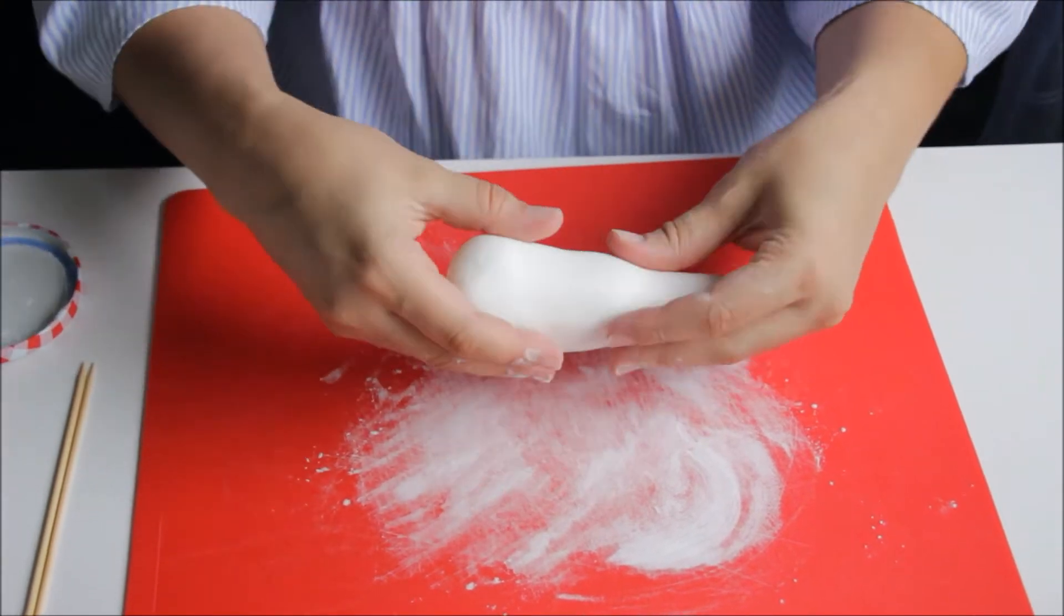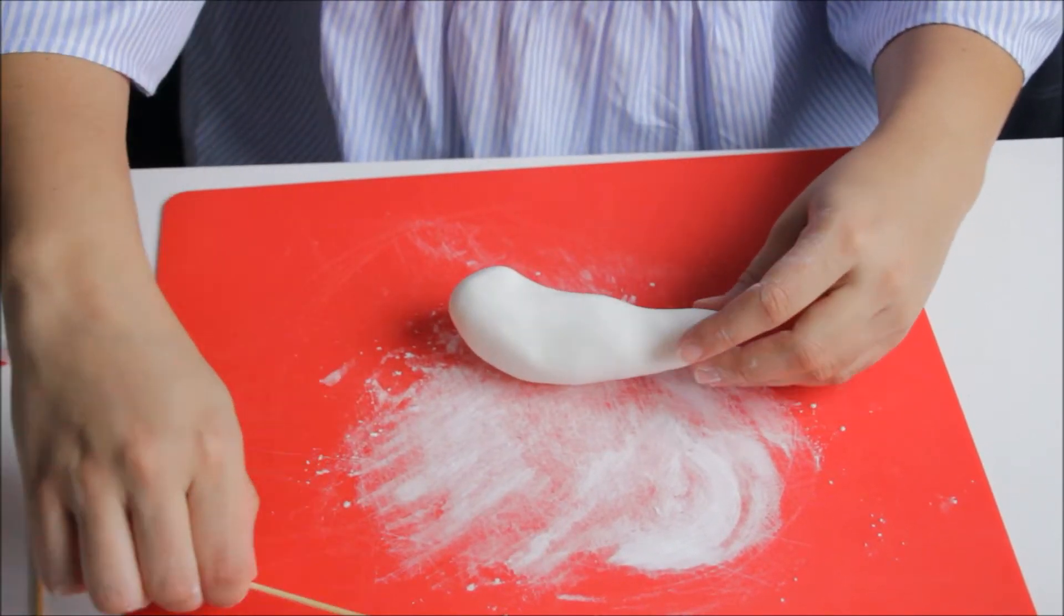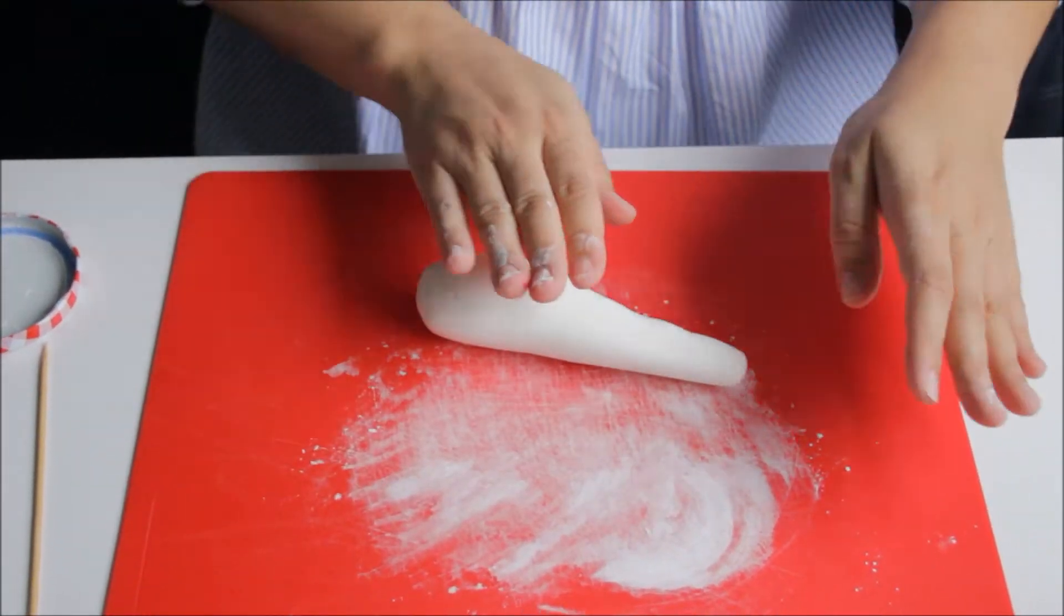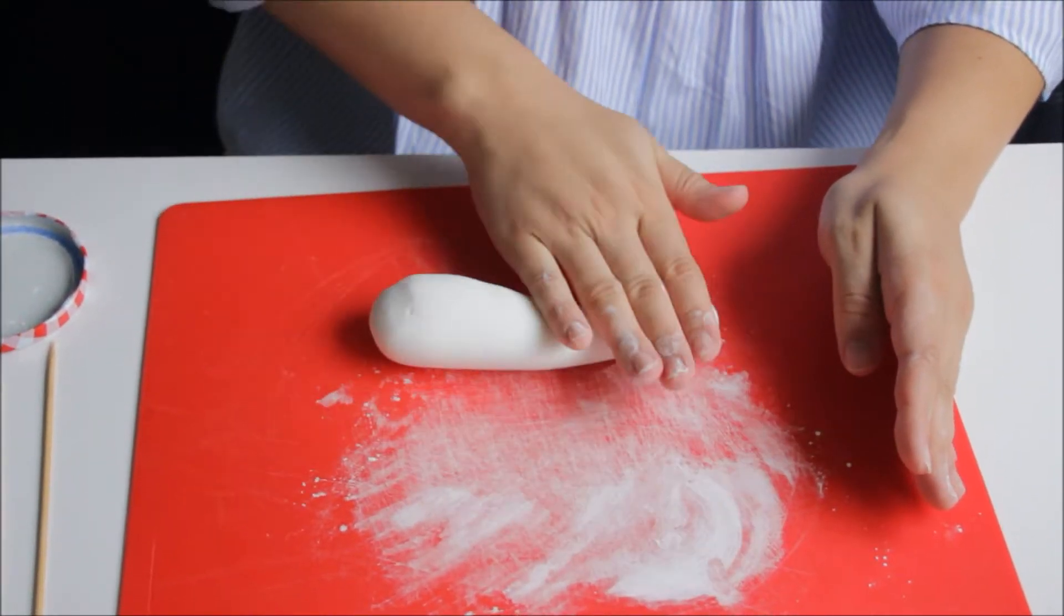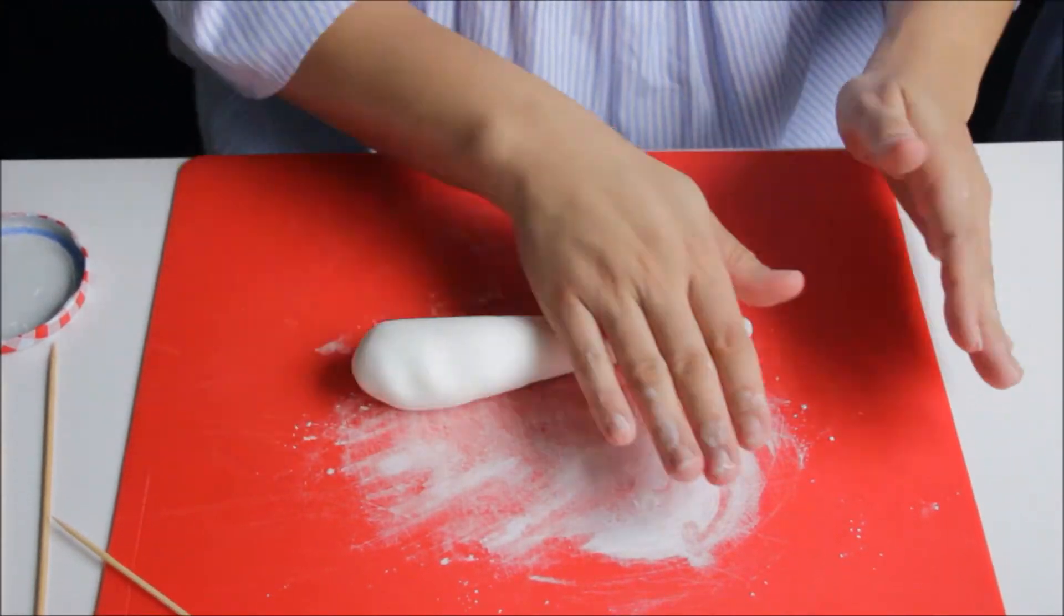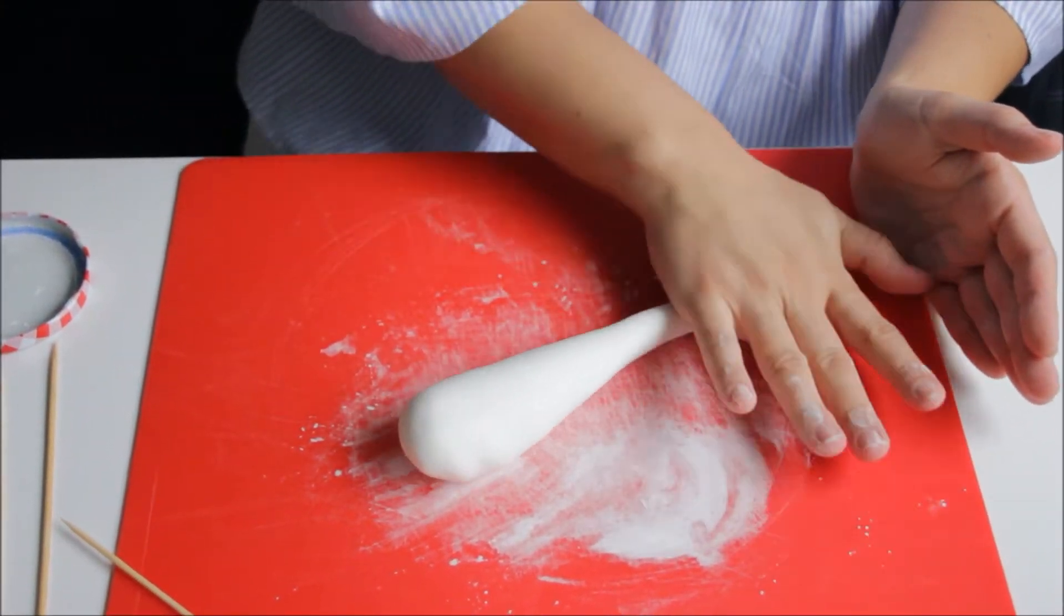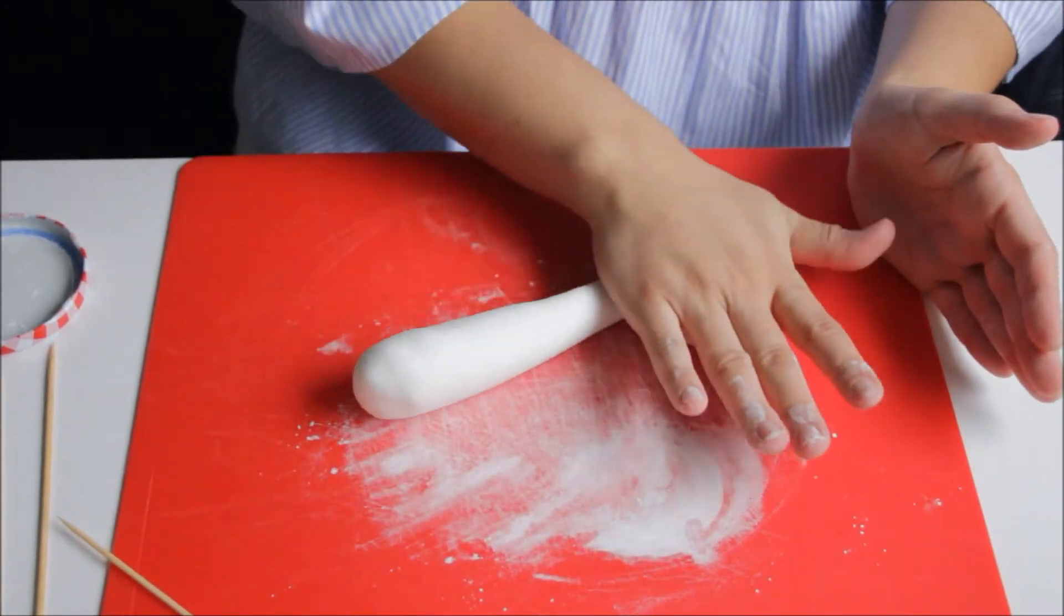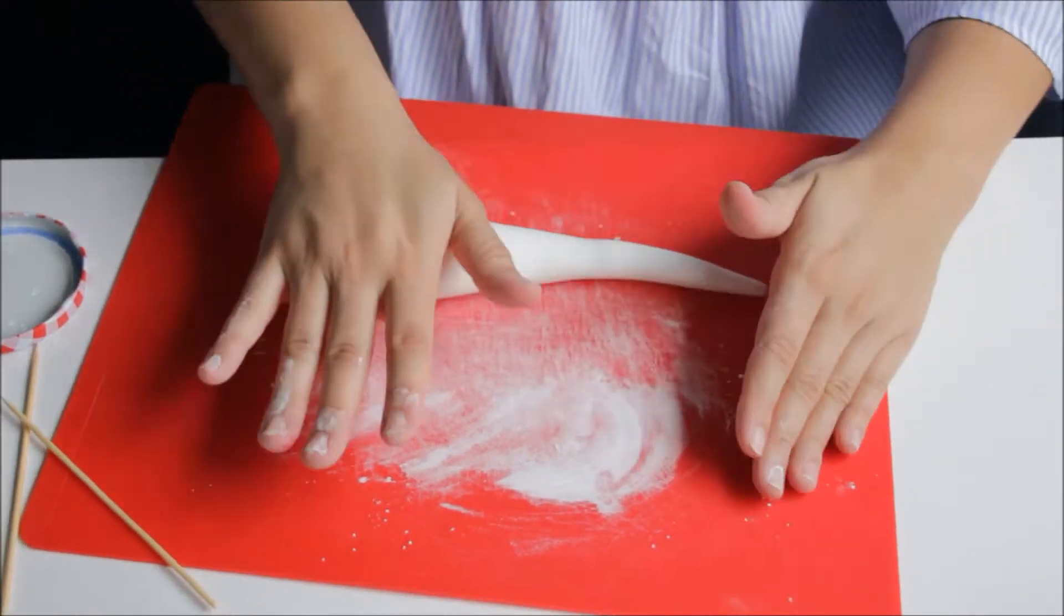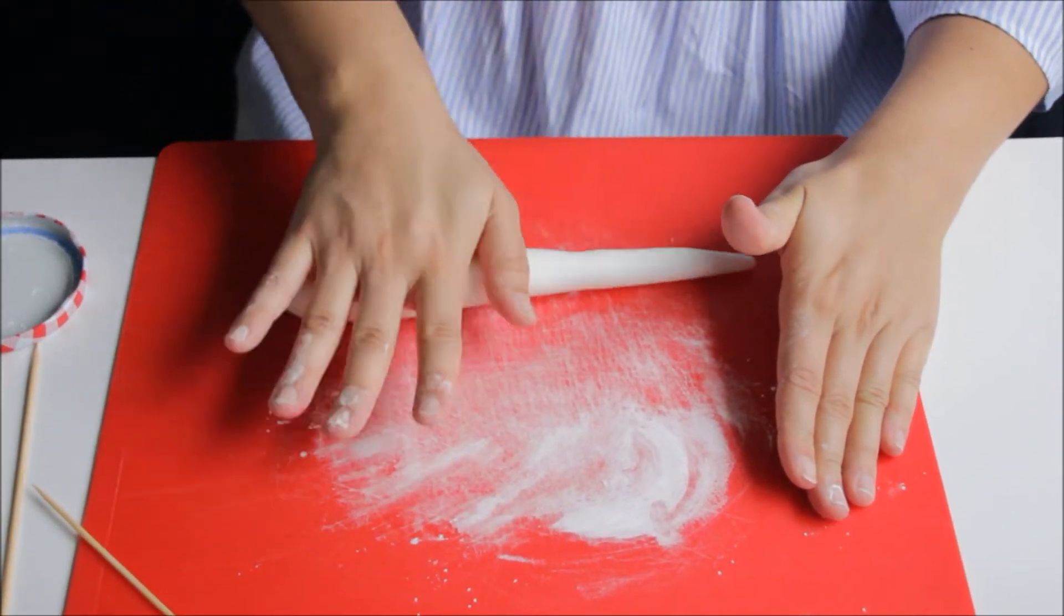And then, I think this will be too much for the horn. But what I'm going to do, I'm going to roll it out like this, so that this end will be thinner and then it gets thicker to the other end.